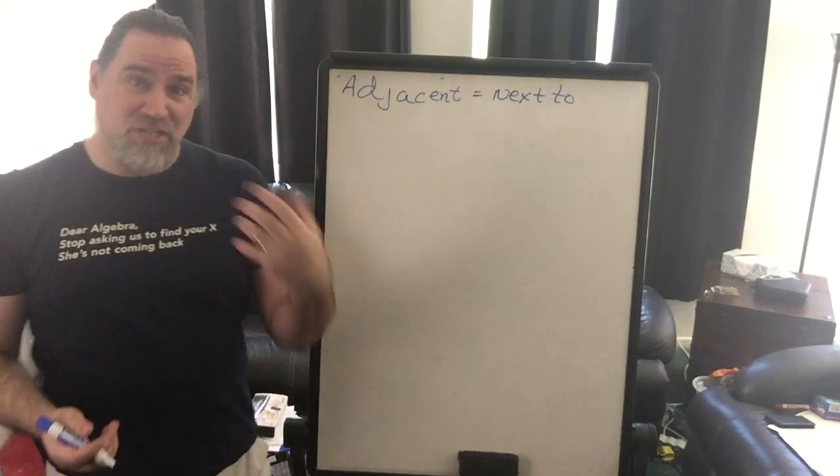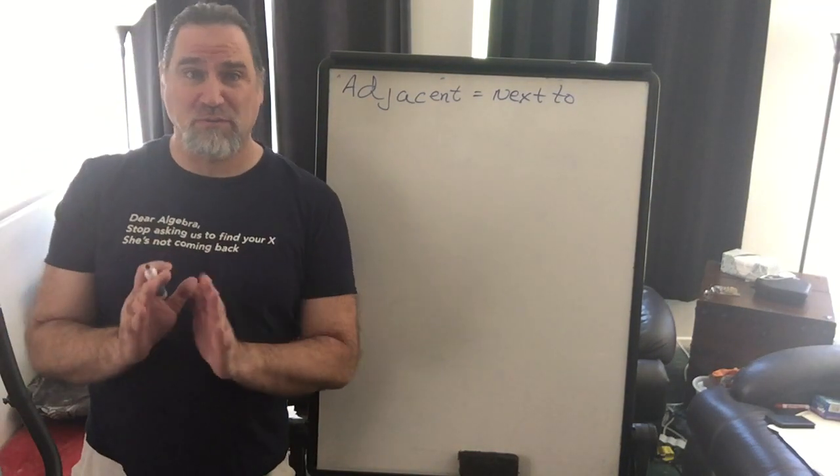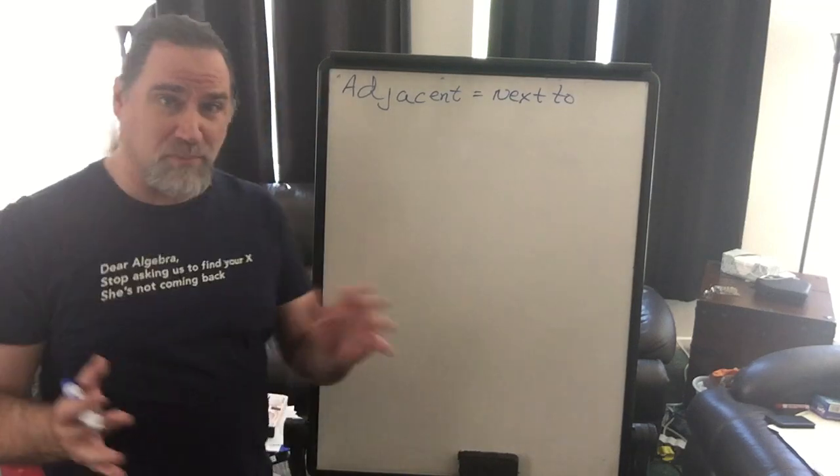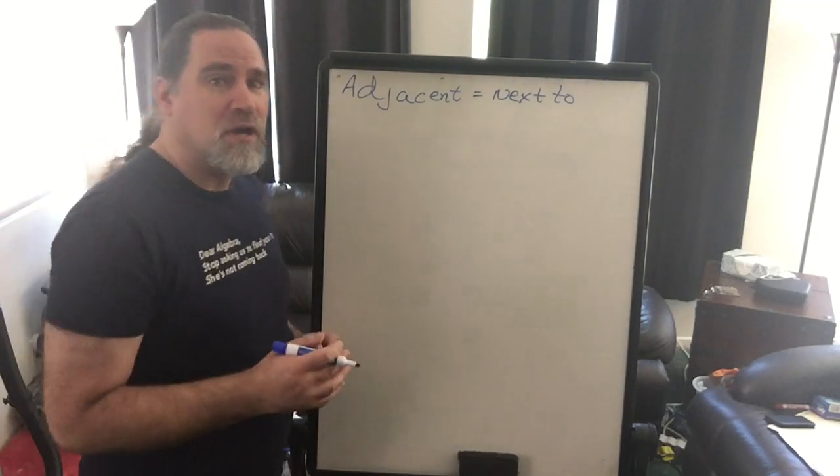So if we're talking about adjacent angles, we're talking about two angles that are right next to each other, that are on either side of what we call a transversal, if you remember that from an earlier description.